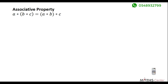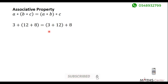The associative property states that (a star b) star c equals a star (b star c). For addition: 3 + (12 + 8) — first compute 12 + 8 = 20, then 3 + 20 = 23. And (3 + 12) + 8 = 15 + 8 = 23. So addition is associative.